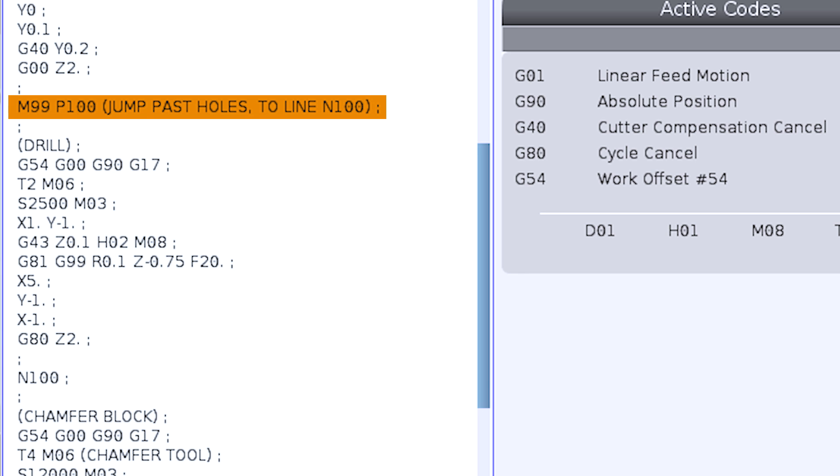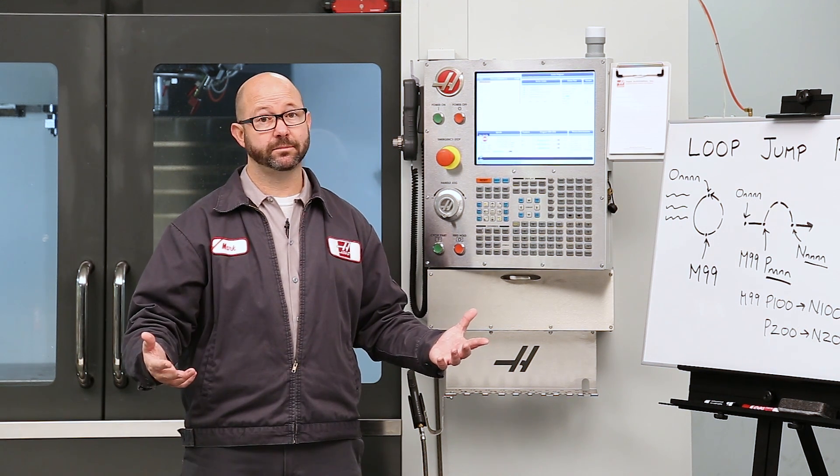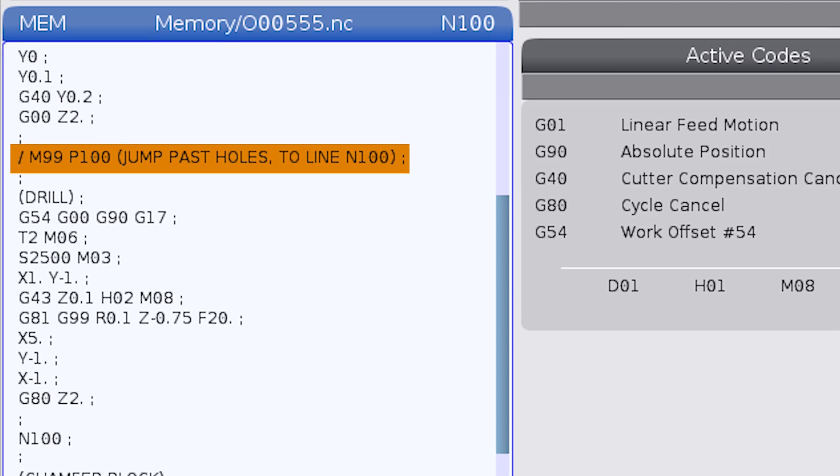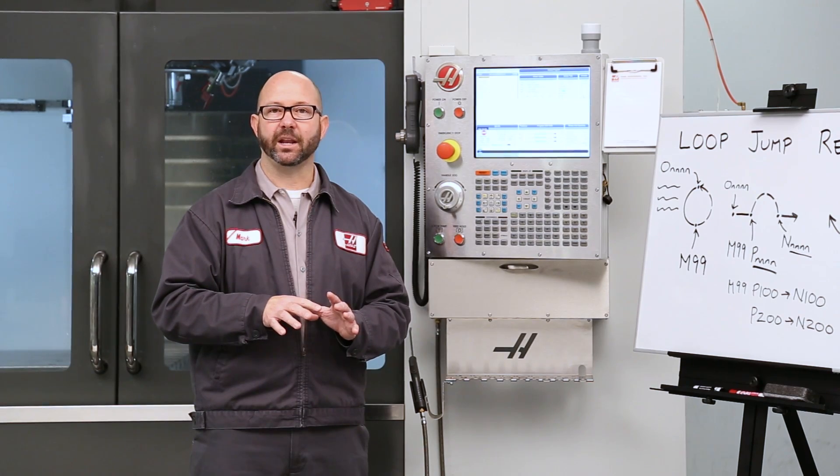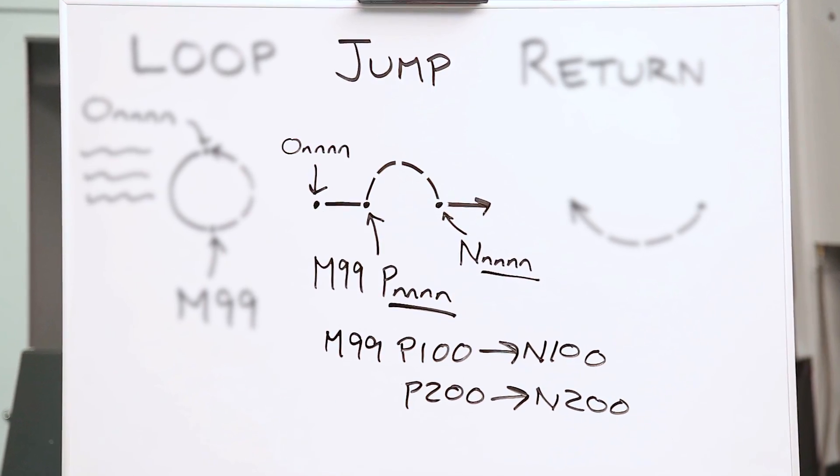Now, if we only want to make this jump sometimes, then we can add a Block Delete right to our M99 line. If Block Delete is off, then we're going to make the jump and we're not going to run those holes. If Block Delete is on, then the M99 jump line is ignored and we run the program normally. And it's worth mentioning that you don't need the macros option in order to use this M99 jump.